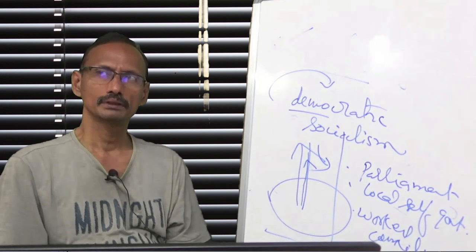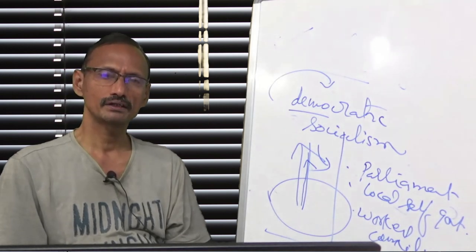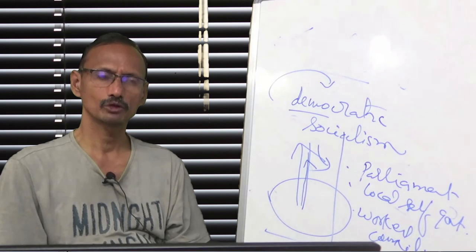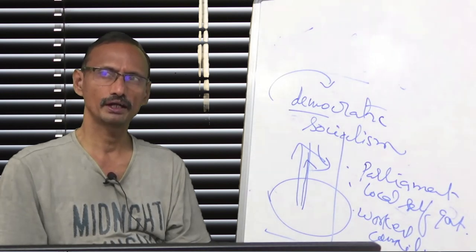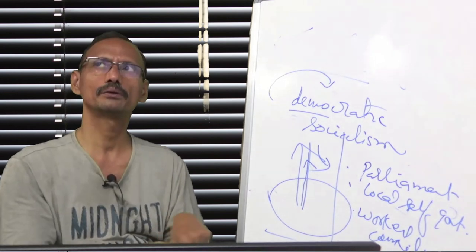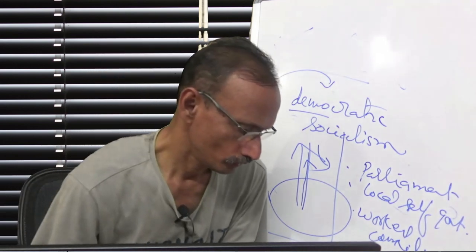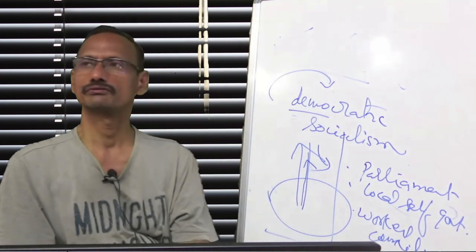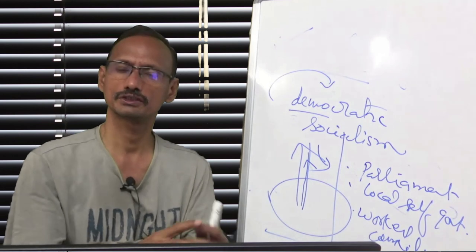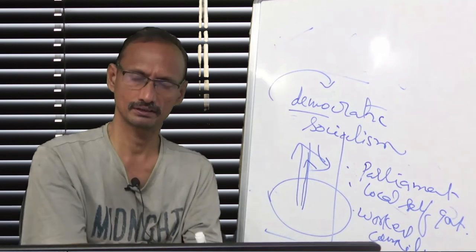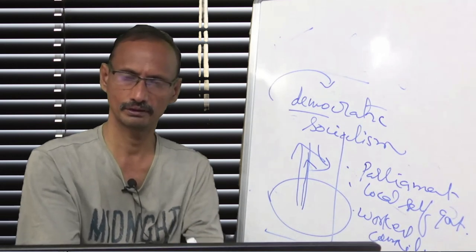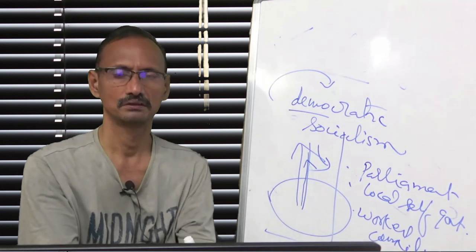But Bernstein, was he right in thinking that democratic socialism would end, would one day lead to government which is not class biased or the society or there would be society without classes? No.